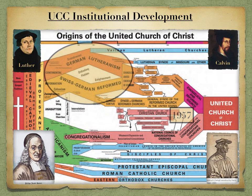The UCC as an institution began in the formational thoughts of Luther, Calvin, Spener, and Zwingli. Luther's most important doctrine was justification by faith alone through God's grace. Luther began to teach that salvation is a blessing of God's grace, attainable solely through faith in Jesus as the Messiah.